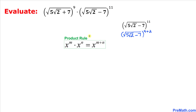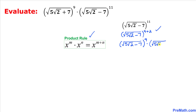Now let's recall the product rule of exponents. Using this rule we can write this as square root of 5 times square root of 2 minus 7, whole power 9, times square root of 5 times square root of 2 minus 7, whole power 2.